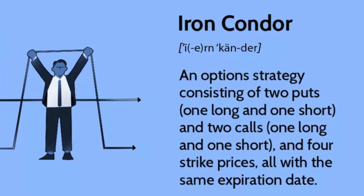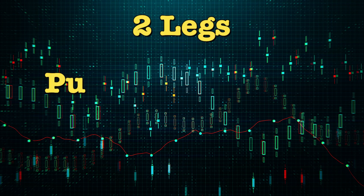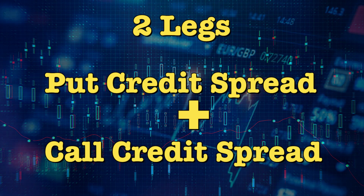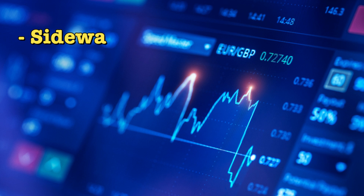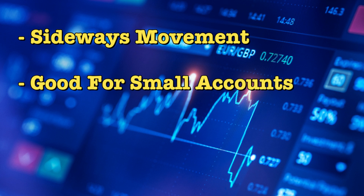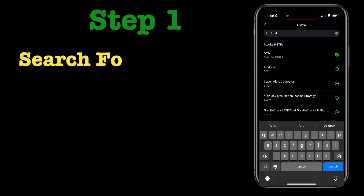Iron condor is one of the advanced option strategies and it is mainly made up of two legs: the first one is a put spread and the second is a call spread. When you combine these two strategies together, that is essentially your iron condor. This is very good for a stock which is moving sideways, within a range, and it's also great for growing a small account quickly with a higher return on investment.